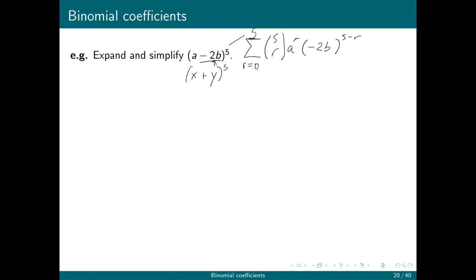So I'm going to need to know what the 5 choose r's are. And rather than write down the formula for each one of those, I'm just going to use the triangle. 1, 1, 1, 1, 1, 2, 1. Remember, every number is the sum of the two above it. 1, 3, 3, 1.